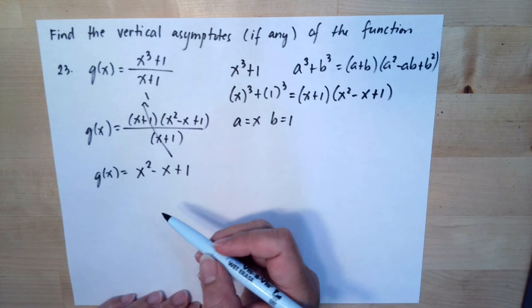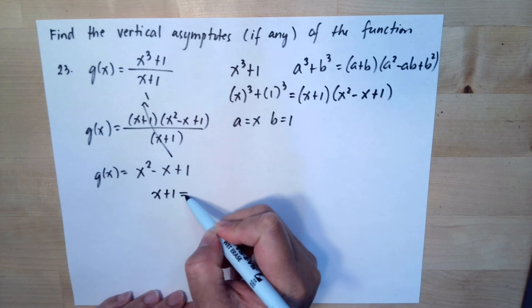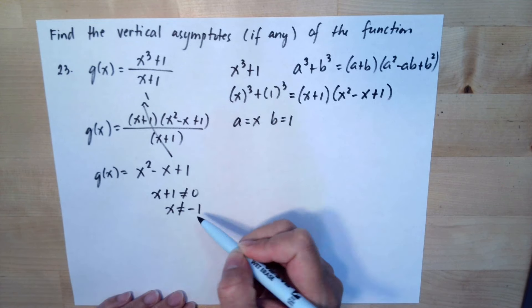So we can see that there is no asymptote but you can see x + 1 cannot be equal to 0 so x cannot be equal to negative 1.